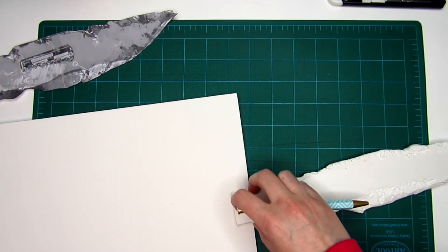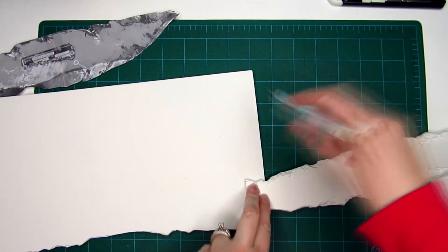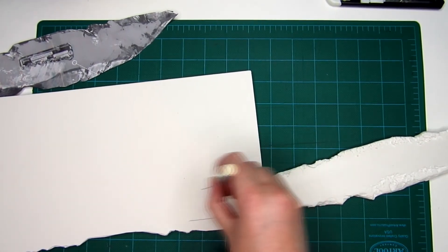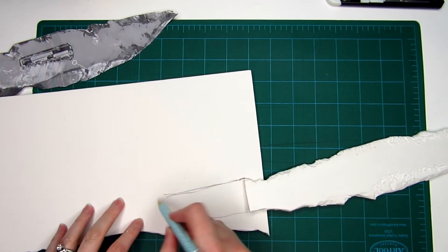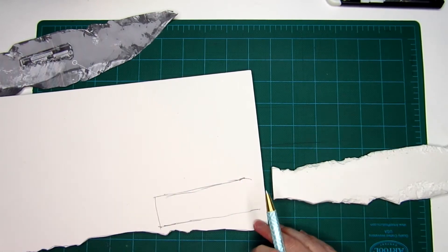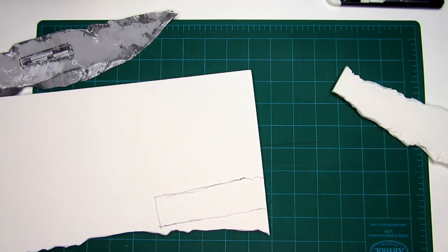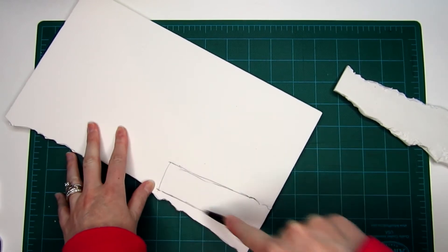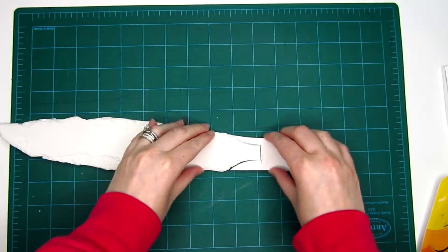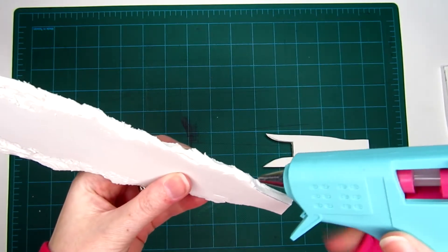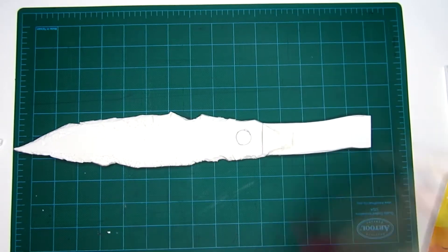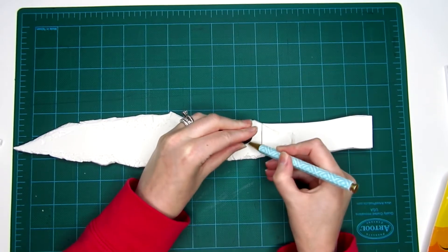Then I made a simple handle and glued it on. Referencing the gear guide's photo, I traced and cut out a small circle above the handle.